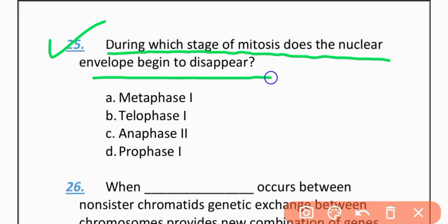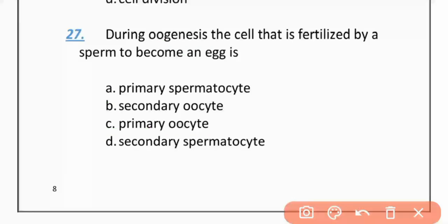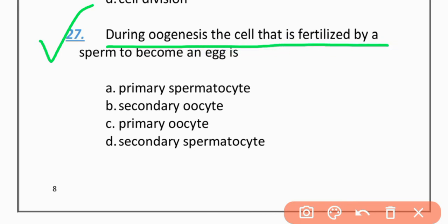MCQ 25: During which stage of meiosis does the nucleolus begin to disappear? Options: Metaphase 1, Telophase 1, Anaphase 2, Prophase 1. The correct option is Prophase 1.